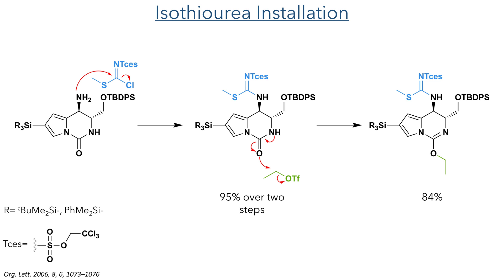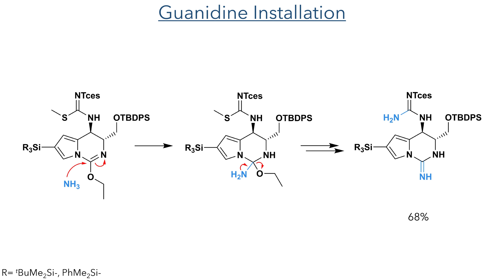This product was then reacted with ethyl triflate, which alkylated the carbamide oxygen. This was required for the next step of the synthesis, which was to finish the installation of the guanidine nitrogen atoms. Reaction with ammonia formed a hemiaminal-type intermediate, which eliminated the ethoxide, forming the guanidine. A similar displacement also occurred at the thiomethyl group, and both nitrogen groups were introduced in a 68% yield.